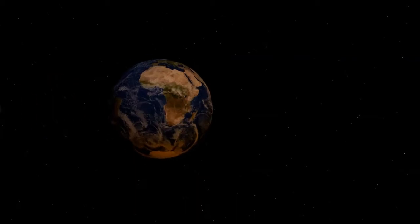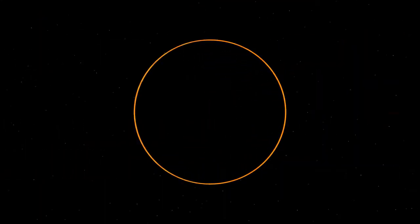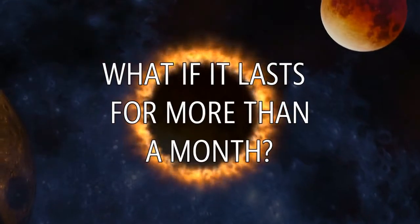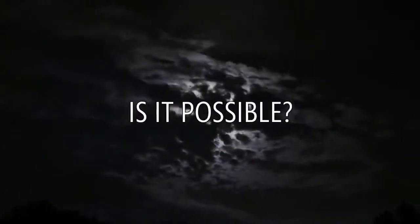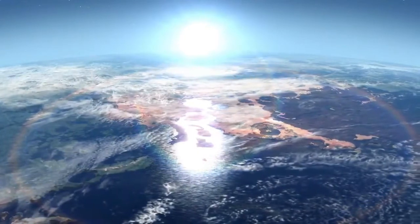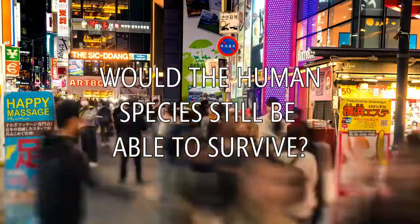On December 14, the last solar eclipse of 2020 may occur, and the Moon will come between Earth and Sun again. But what would happen if a solar eclipse lasts for more than a month? Is it possible? If it is, then what would happen to the temperature? Would it get a lot cooler? Would the human species still be able to survive?